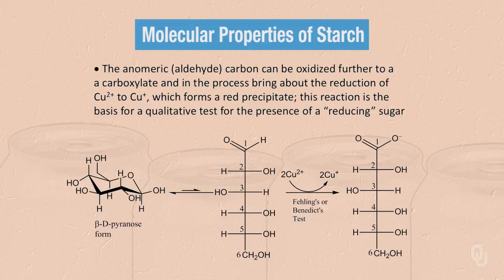In the process, one of the components of Fehling's reagent, or Benedict's reagent — copper-2 ions — gets reduced to copper-1. So as the glucose aldehyde group is oxidized to a carboxylate, the copper-2 is reduced to copper-1. Copper-1 forms part of an insoluble precipitate that is a red color, and this forms the basis of a qualitative test to detect the presence of a reducing sugar.